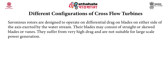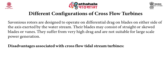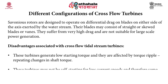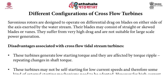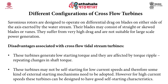Savonius rotors suffer from very high drag and are not suitable for large-scale power generation. The disadvantages associated with cross flow tidal stream turbines include low starting torque as they are affected by torque ripple — repeating changes in shaft torque. These turbines may not be self-starting for low current speeds and therefore some kind of external starting mechanism needs to be adopted. However, for high current speeds these turbines can be designed to have good self-starting characteristics.